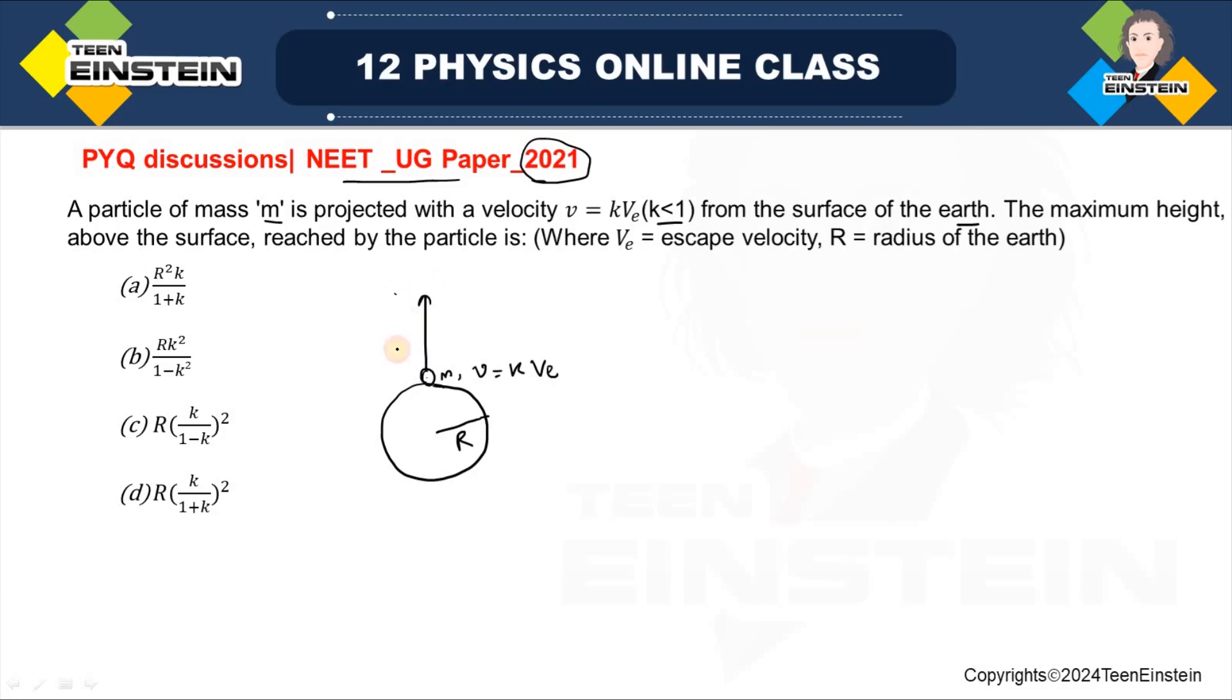And we have to find out the maximum height attained by this particle. So, let us say this height from the surface of the Earth is small h. Now, to solve this problem, we have to apply the principle of conservation of total energy.